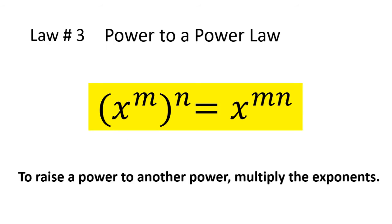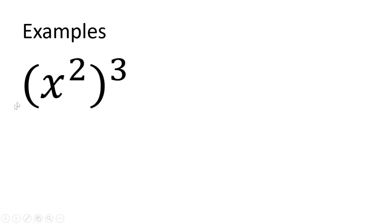Law of exponents number three: the power to a power law. The rule states that x to the power of m, quantity raised to the power of n, equals x to the power of m times n. To raise a power to another power, simply multiply the exponents.